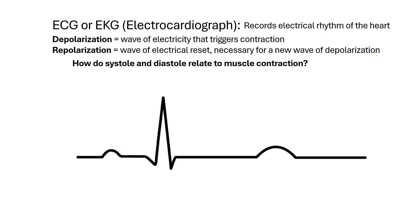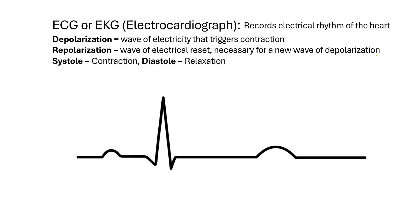What are systole and diastole, and how do they relate to muscle contraction? When we're talking about the heart, systole is contraction and diastole is relaxation.